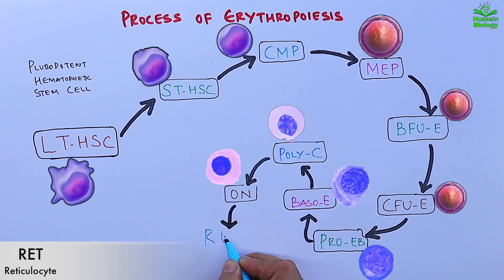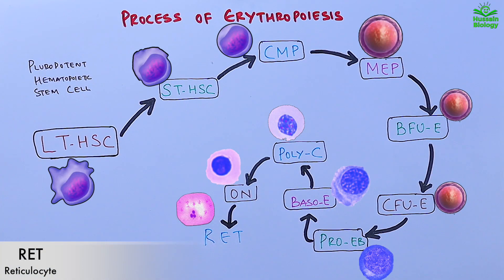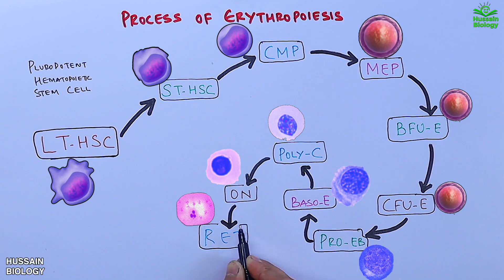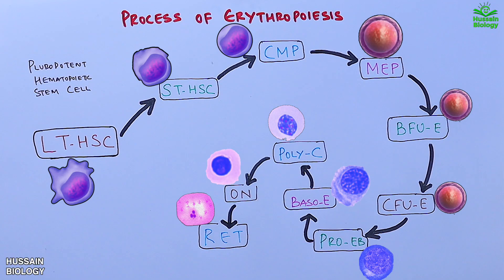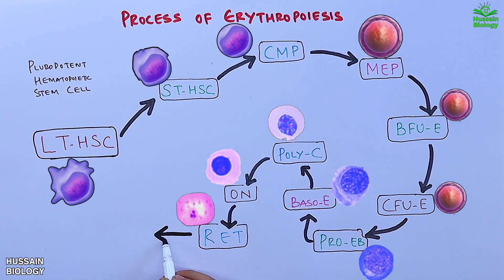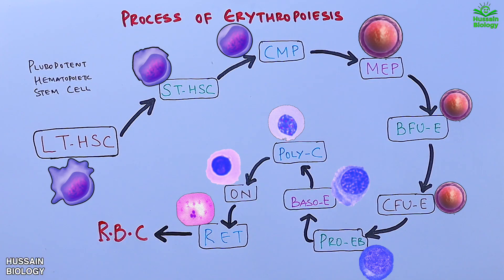They are called reticulocytes because of the reticular or mesh-like network of ribosomal RNA that becomes visible under the microscope. Finally, these reticulocytes mature into RBCs or erythrocytes.